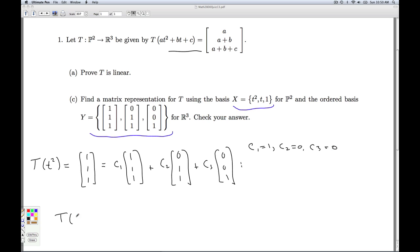So that means that T of T squared, which within the standard coordinates is the vector 1, 1, 1, can be represented in the y-coordinates as, excuse me, 1, 0, 0 in the y-coordinates.